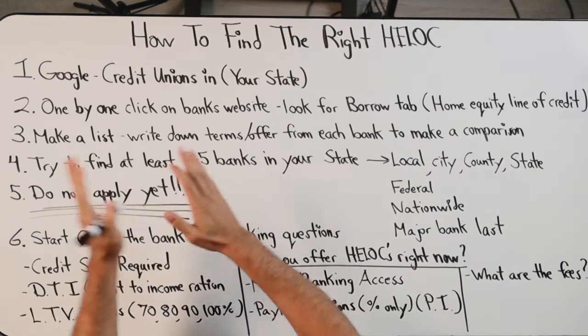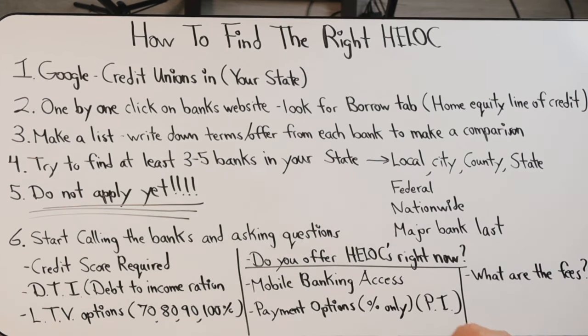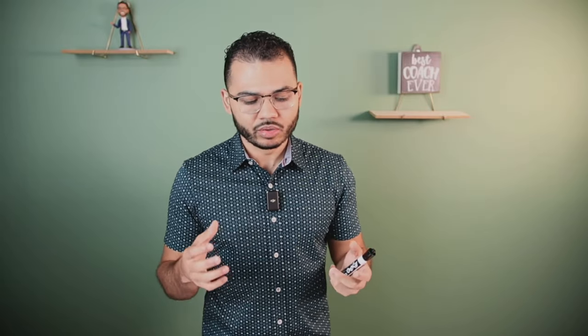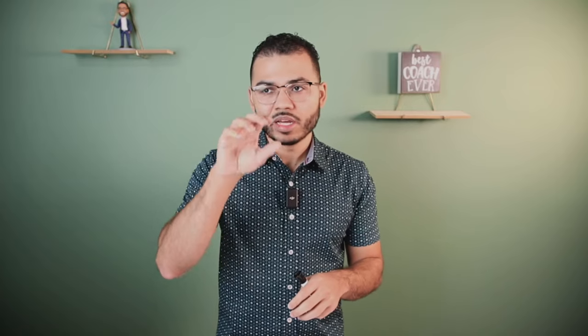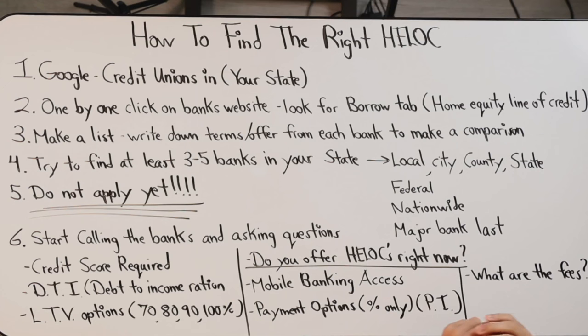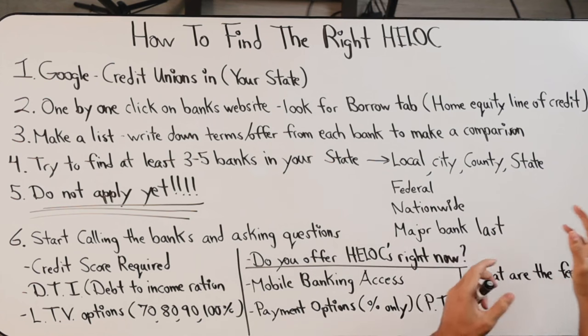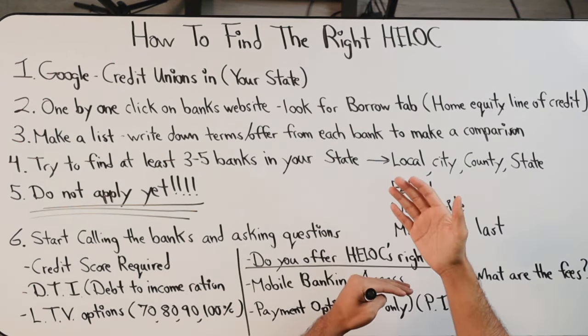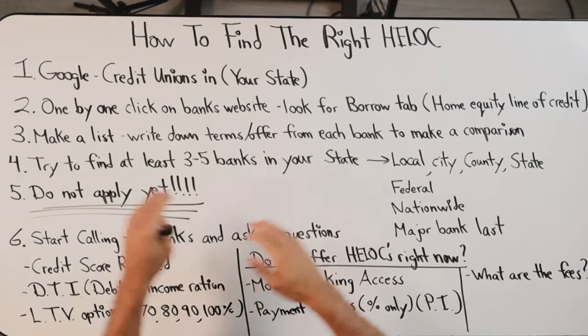Step two: one by one, click on those different bank websites and look for the 'Borrow' tab — it might say 'Borrow' or 'Lending.' Look for that tab, click it or find the dropdown, and look for HELOC or 'Home Equity Line of Credit.' Ignore where it says 'Home Equity Loan' — we're not looking for that. We want a home equity line of credit: something revolving, something accessible. Make your list, whether written or in a Word doc, with links to those banks in a spreadsheet.